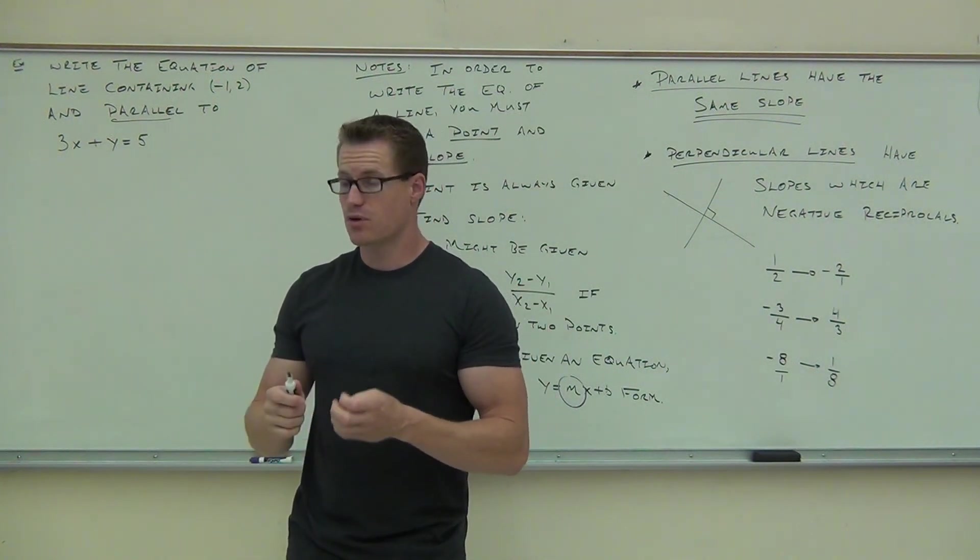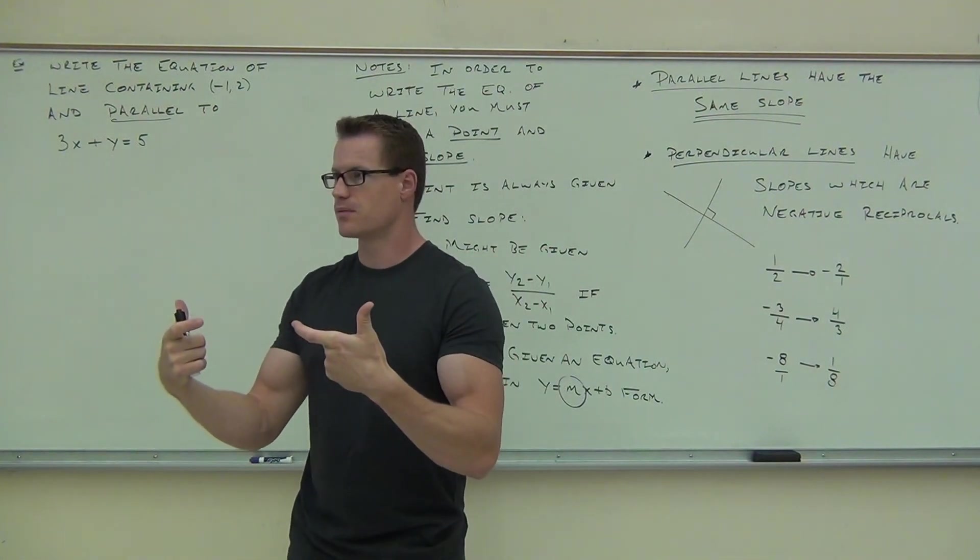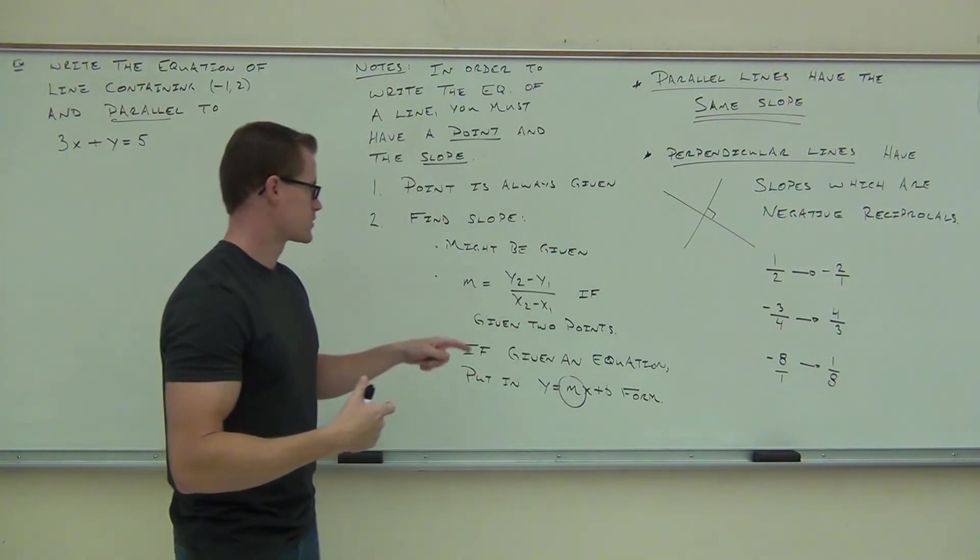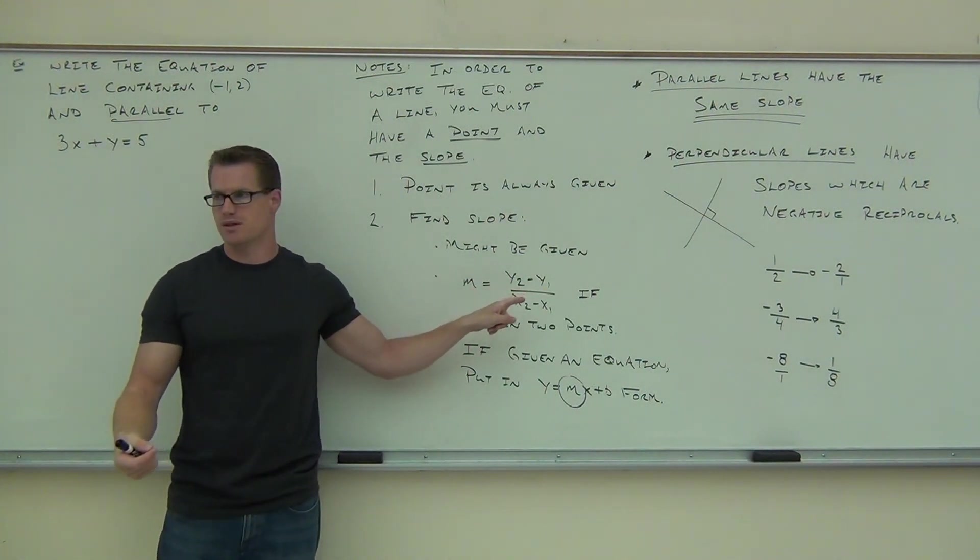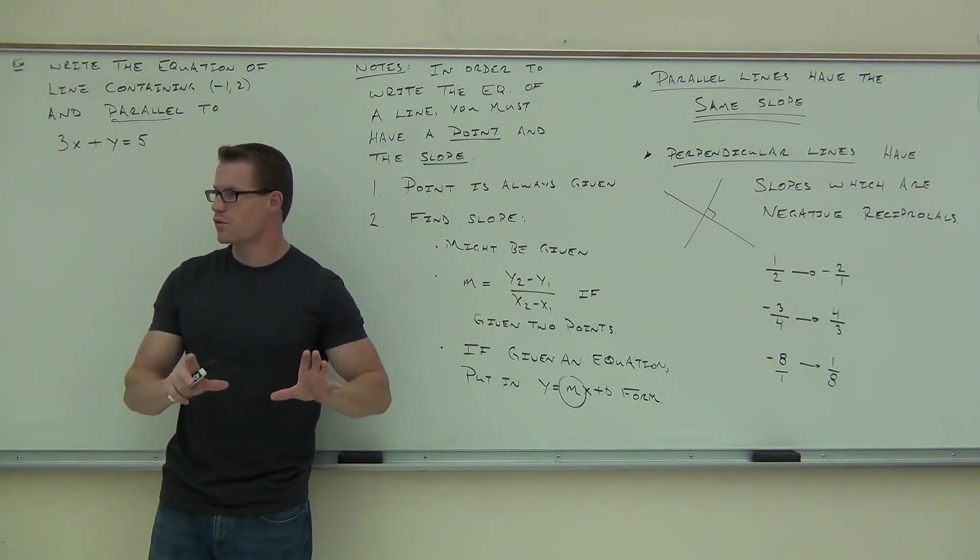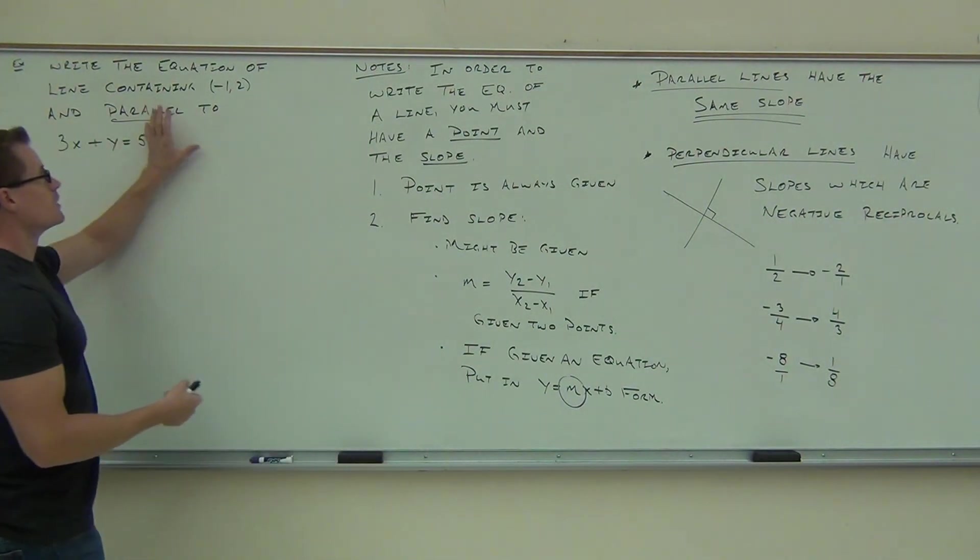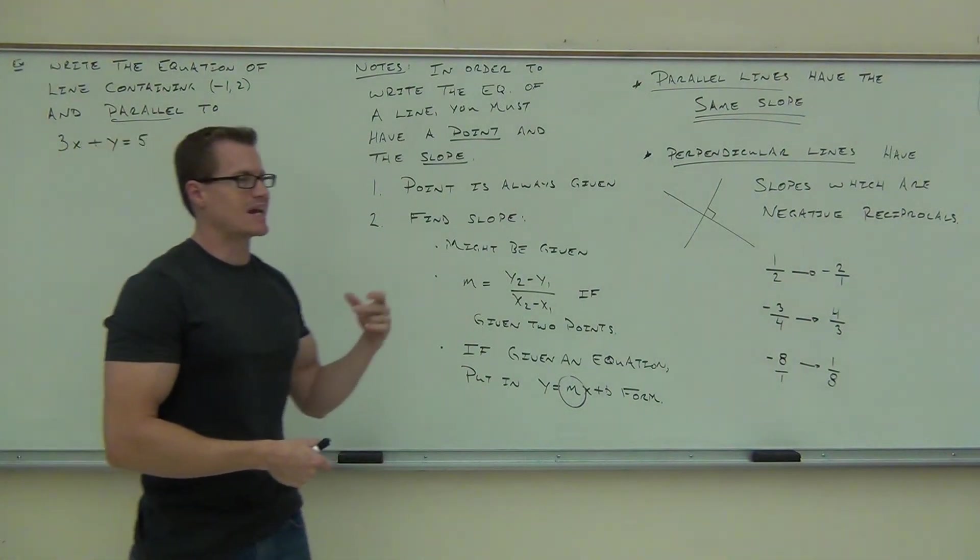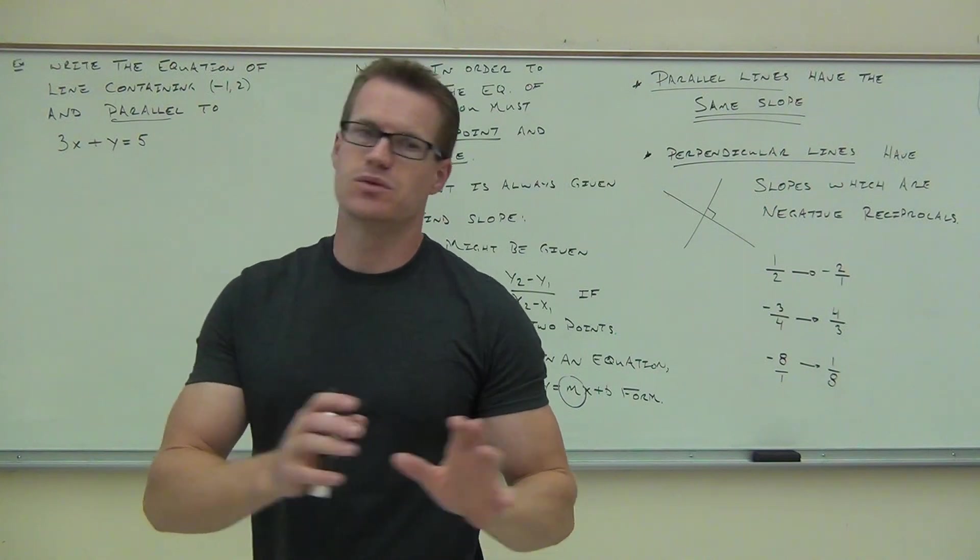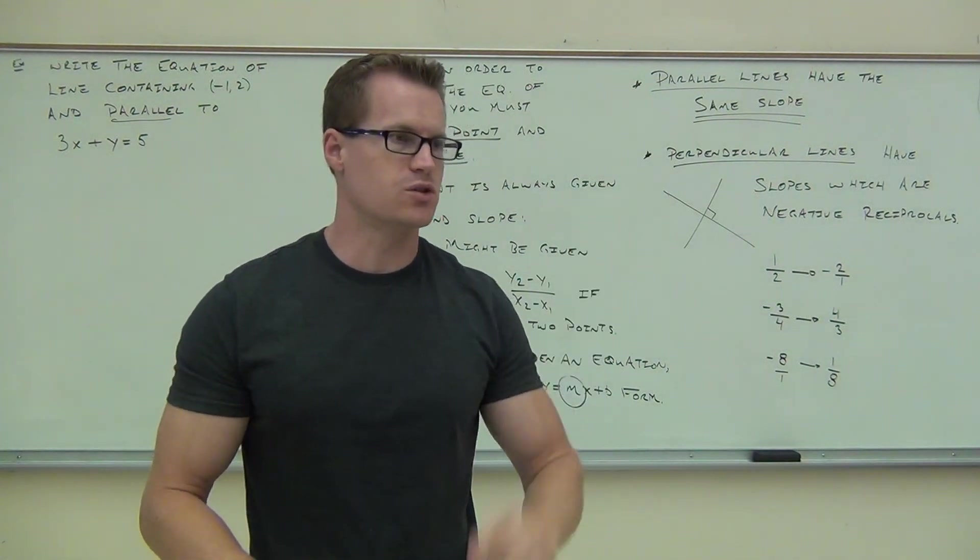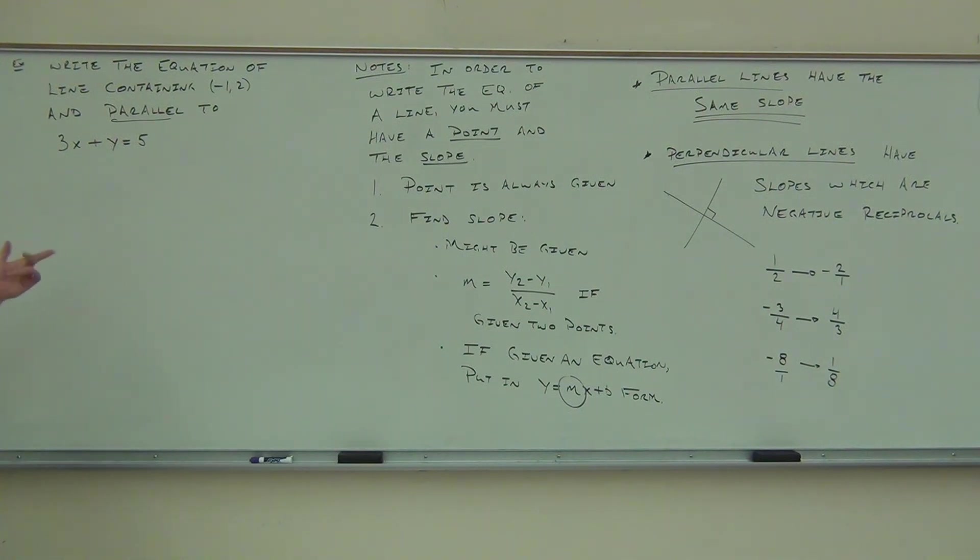Chances are you're probably not going to have a whole lot of questions about writing the equation of a line where I give you a point and I give you the slope. More likely, you're going to have the questions where I give you two points and say write the equation of a line. Where you find the slope. This one right here. Where you find the slope and then you use y minus y1 equals mx minus x1. That's one form that you're going to have on the test. The other form that you're going to have on the test is this thing. Find the equation of a line containing a point and parallel or perpendicular to another line.